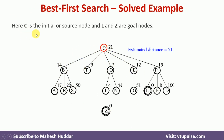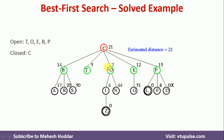In this case, C is the initial or source node, and L and Z are the goal nodes — we have to reach either L or Z. Once we reach any of these, we stop. If we don't reach and there's nothing left in open, we also stop. So first we put C into open because it is the initial state. Now we examine C and find its successors: B, T, O, E, and P. We move C from open to closed and place all these successors into open in ascending order of estimated distance. T comes first, then O, then E, then B and P.